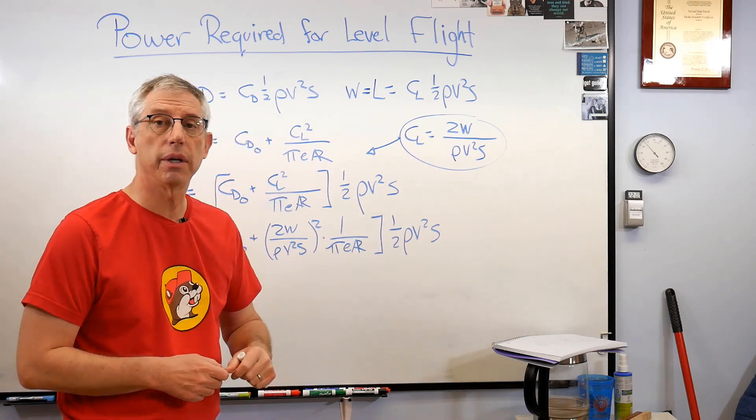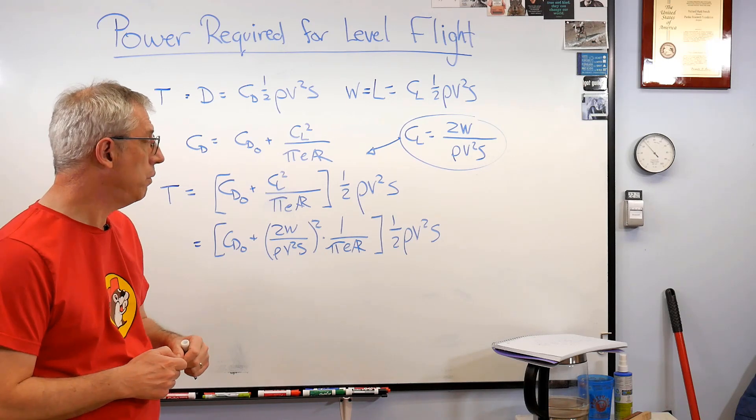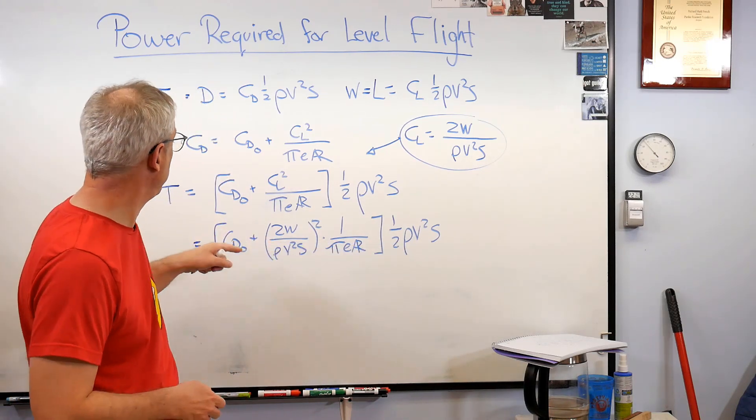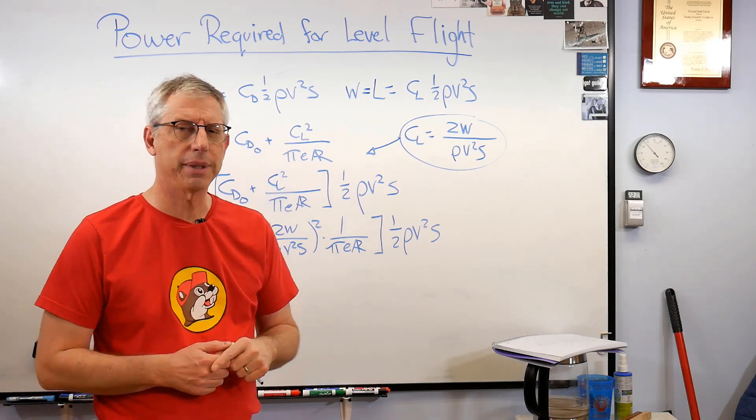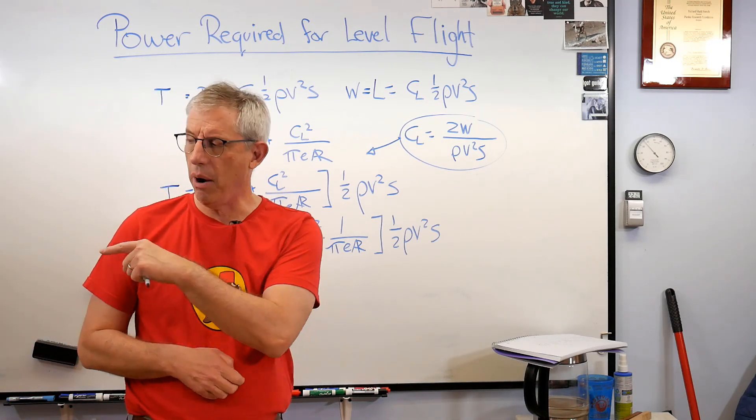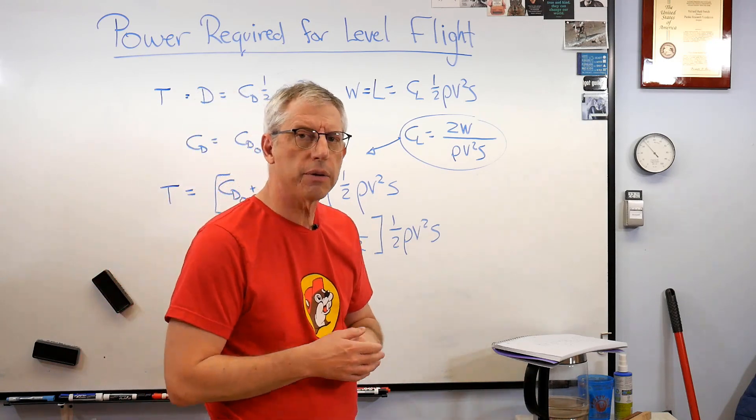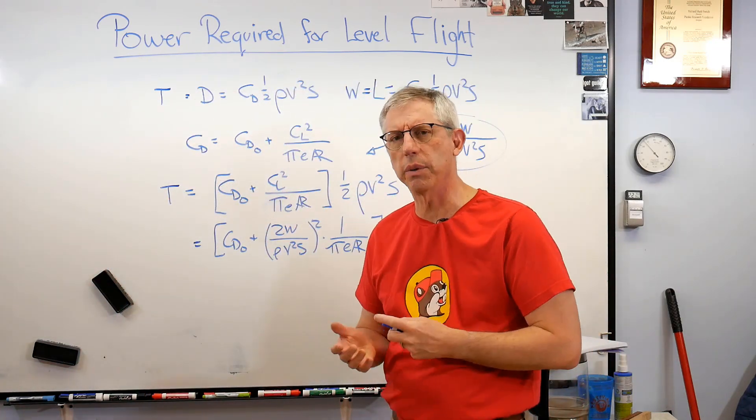In there. Now I can clean this up a little bit but now I've got an expression for the thrust that's a function of weight, velocity, area, things like that, but it's not a function of lift coefficient. So I can now plot this as a function of velocity only because velocity is my independent variable and thrust will be my dependent variable.